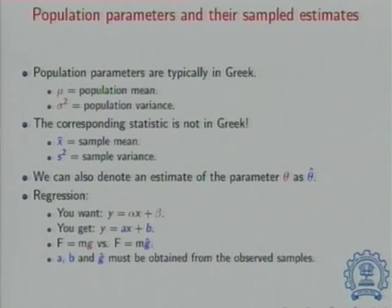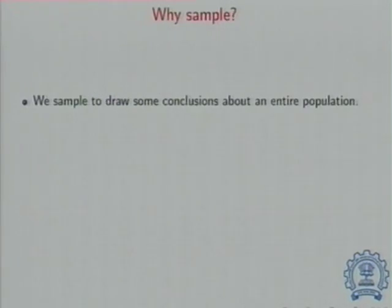I would be extremely surprised and nervous if all of you got 50 heads out of 100, because that is actually reflective of a bias in how you have performed the experiment. So all these things that we observe are estimates of the true fundamental parameters that the model — the physics — suggests. We sample to draw conclusions about an entire population.